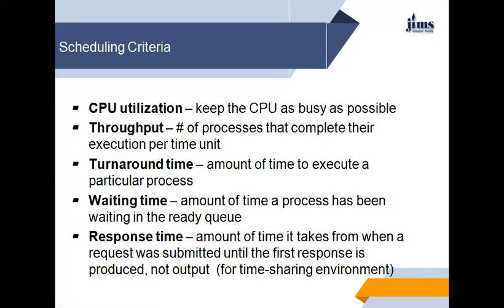Now we will discuss scheduling criteria. CPU utilization: ideally the CPU would be busy 100% of the time; on a real system, CPU usage ranges from 40% — lightly loaded — to 90% — heavily loaded. Throughput is the number of processes that complete their execution per unit time, ranging from 10 per second to 1 per hour. Turnaround time is the amount of time to execute a particular process from submission to completion. Waiting time is how much time a process spends in the ready queue waiting for the CPU.